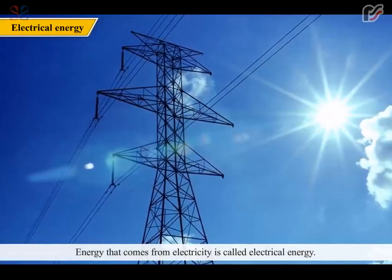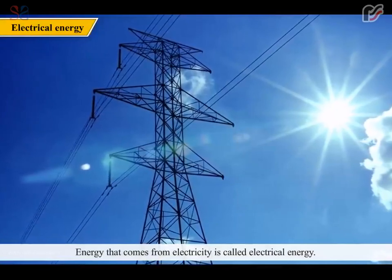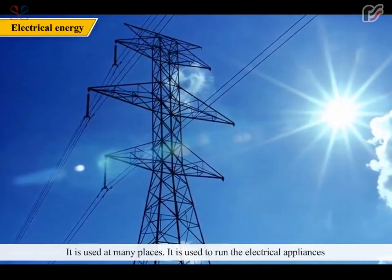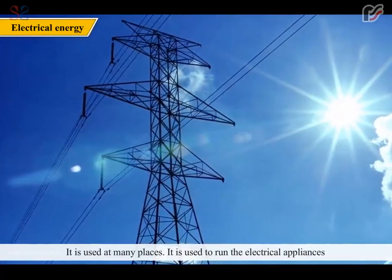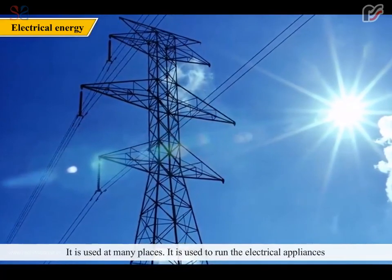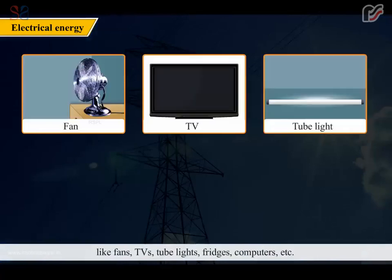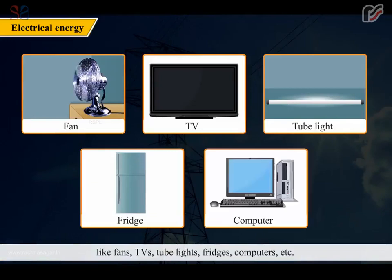Energy that comes from electricity is called electrical energy. It is used at many places to run electrical appliances like fans, TVs, tube lights, fridges, computers, etc.